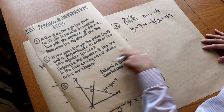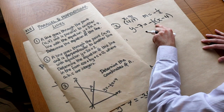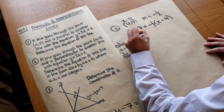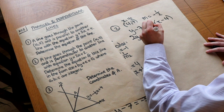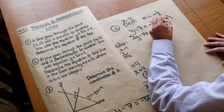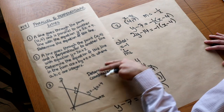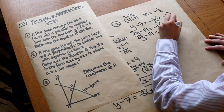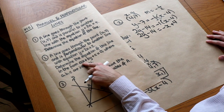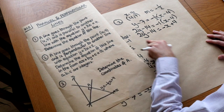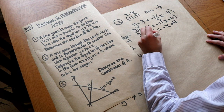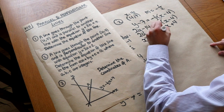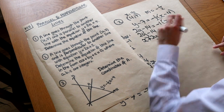We want the equation in the form ax plus by plus c equals zero with no fractions, so we multiply both sides by two. The minus a half becomes minus one, giving 2y minus 14 equals minus 1 times x minus 4. Expanding that out, then moving everything to the left-hand side with x positive, we get x plus 2y minus 18 equals zero.